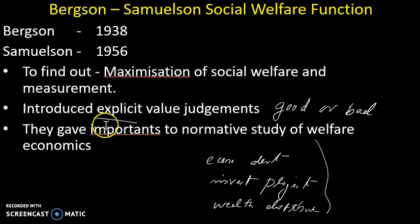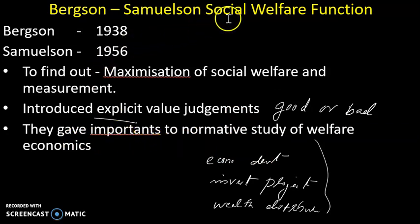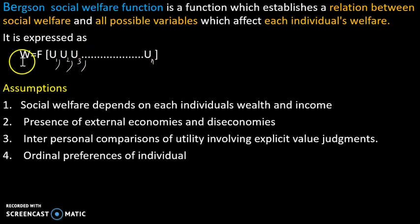Let us clarify the Bergson and Samuelson social welfare function and explain its equation. The equation is: W equals a function of U1, U2, U3, and so on.